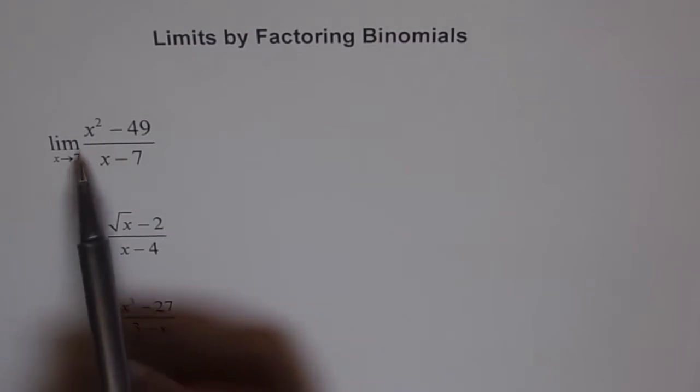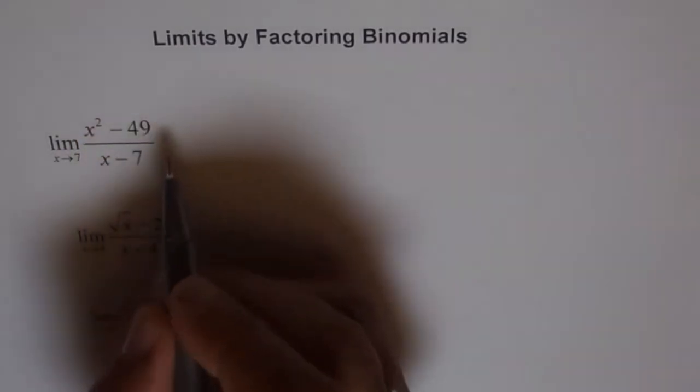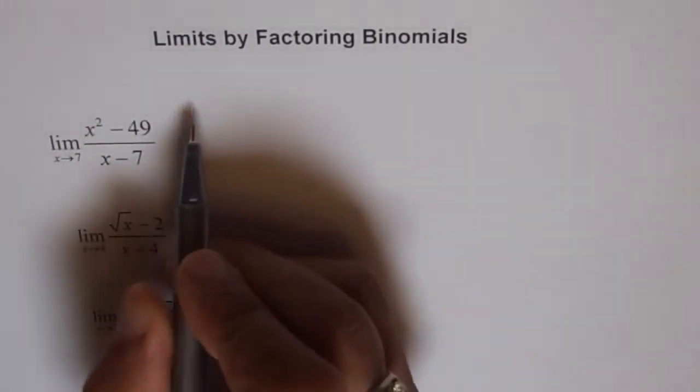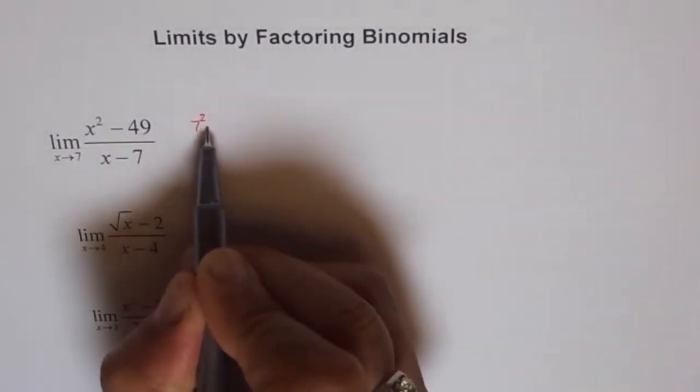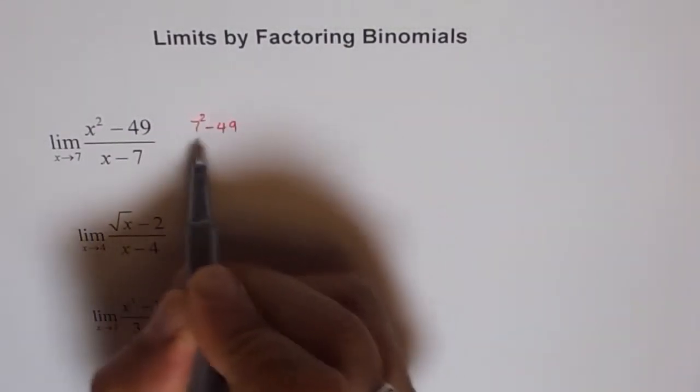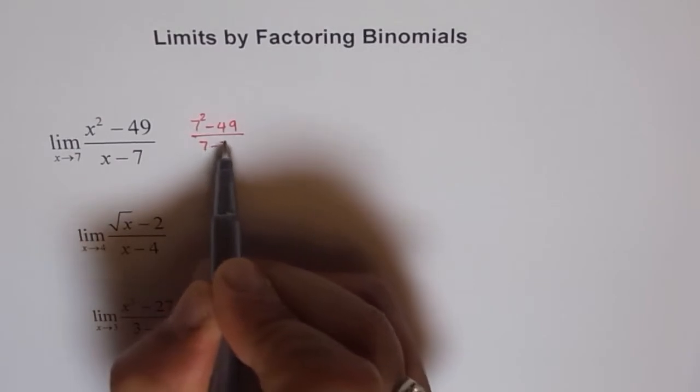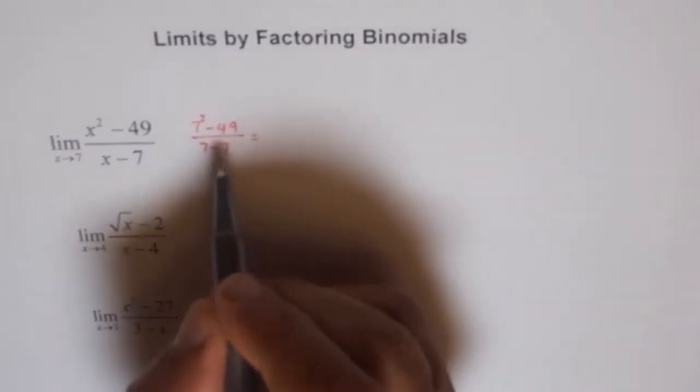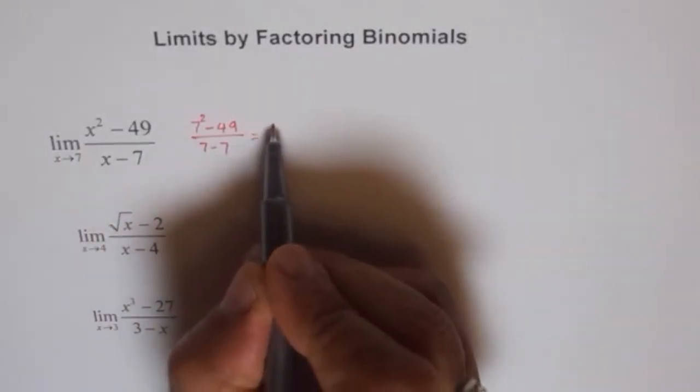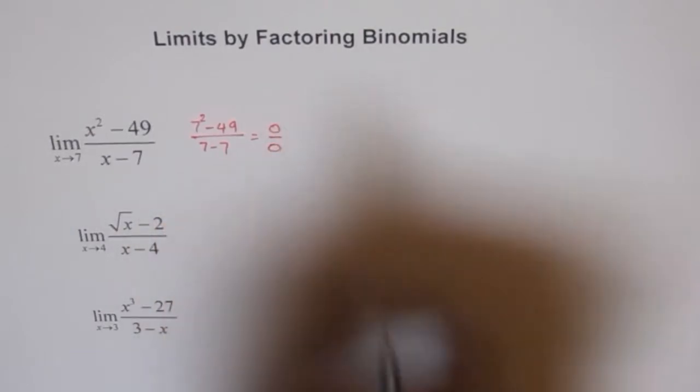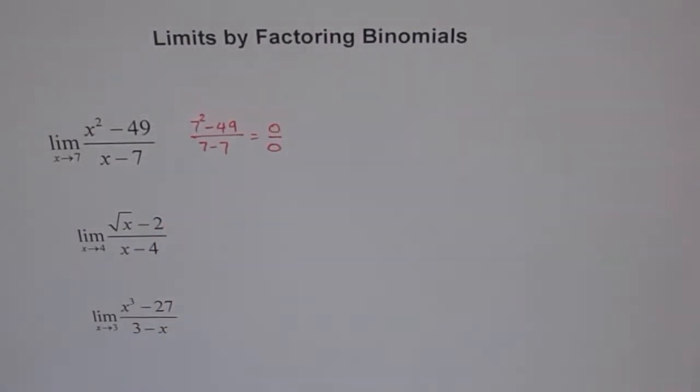Now here, if I substitute 7 here, what do I get? If I substitute 7, I get 7 squared minus 49 over 7 minus 7, which gives me 49 minus 49 and 0 over 0. 7 minus 7 is also 0. So that 0 over 0 is meaningless. It has got no meaning. It's an absurd value. So limit you cannot find by just substitution.